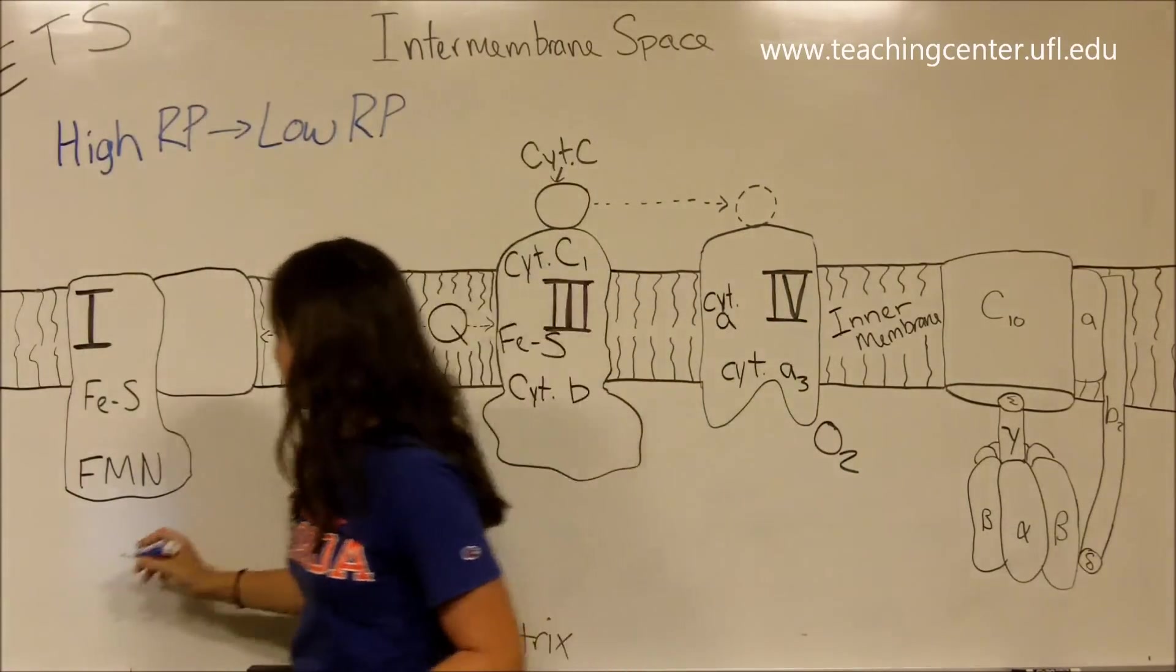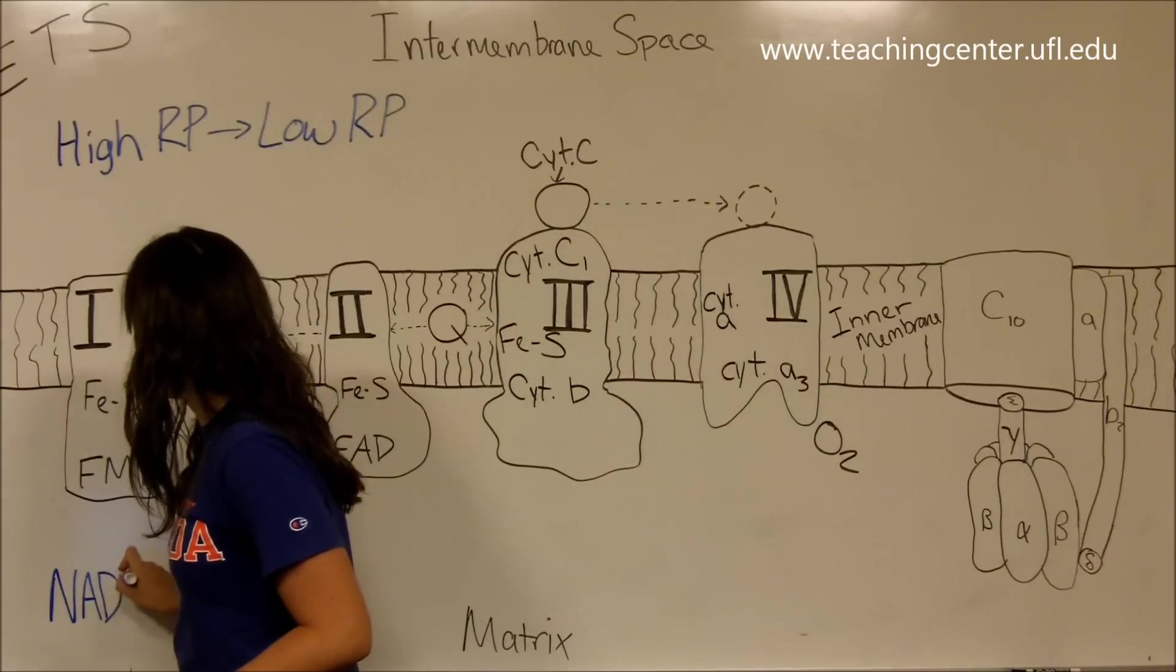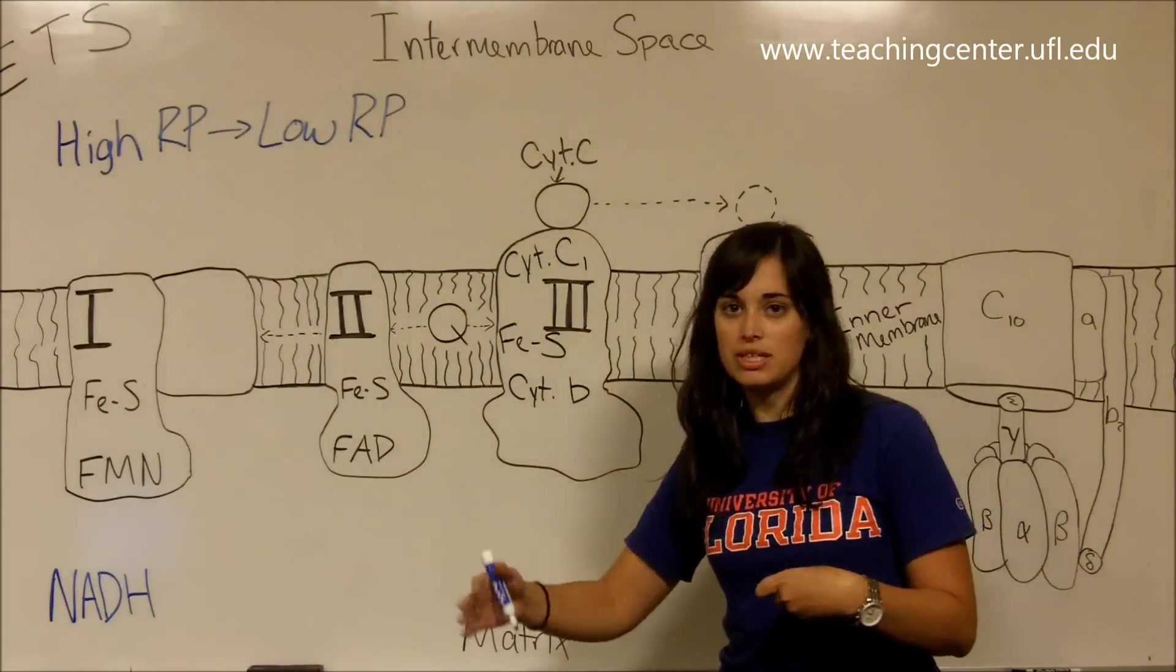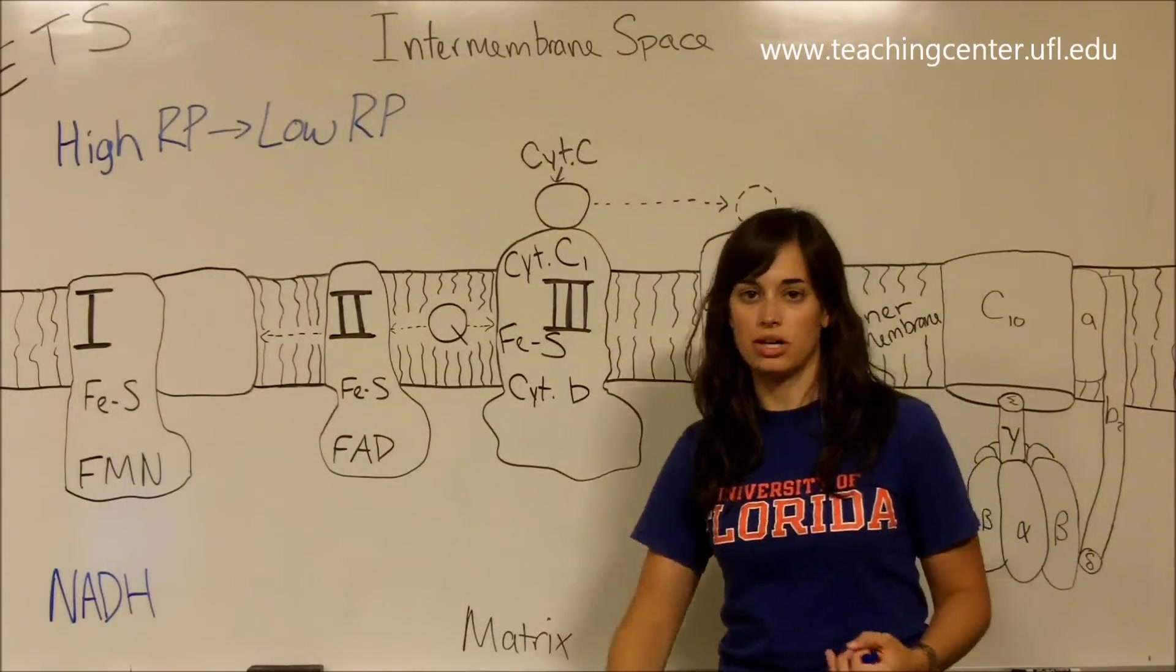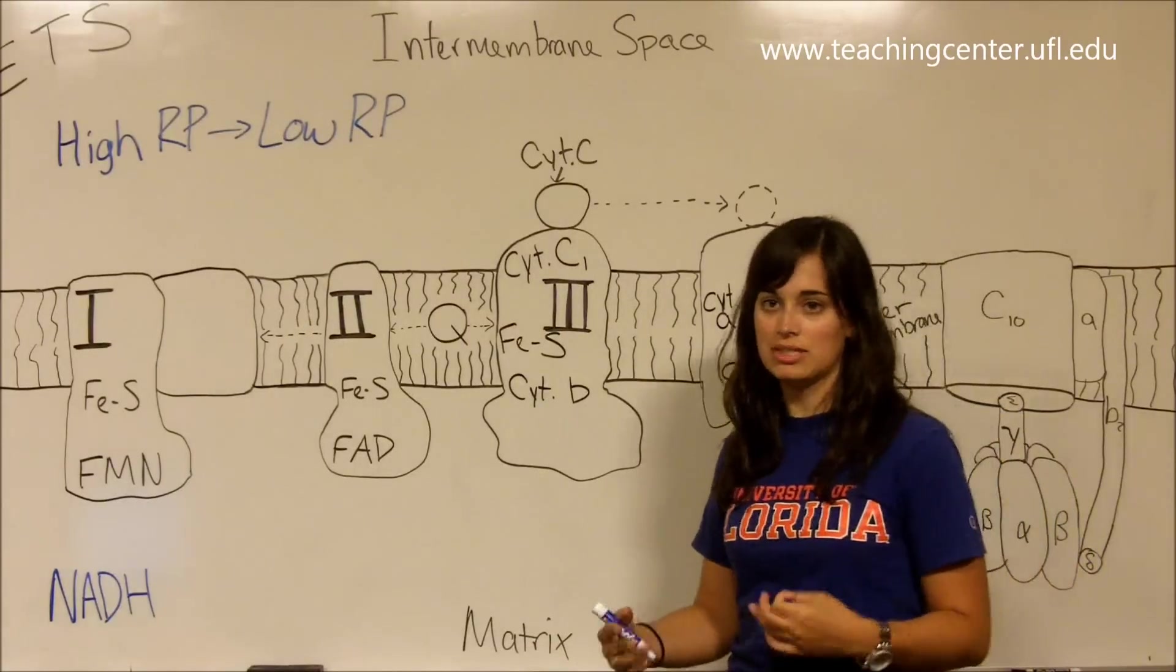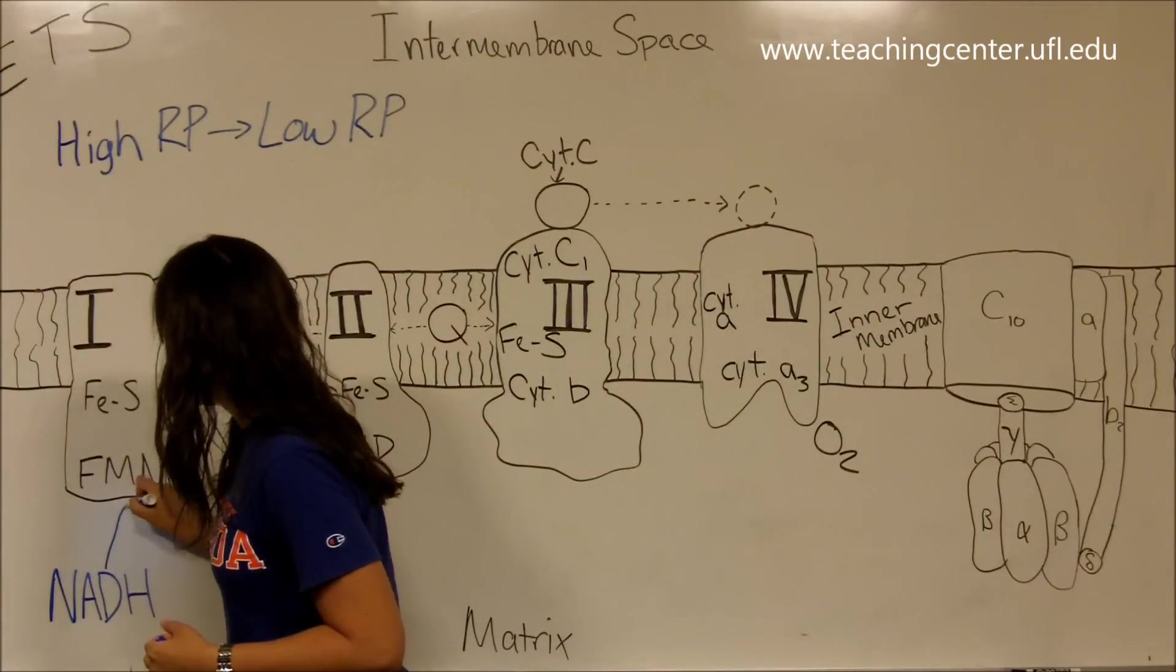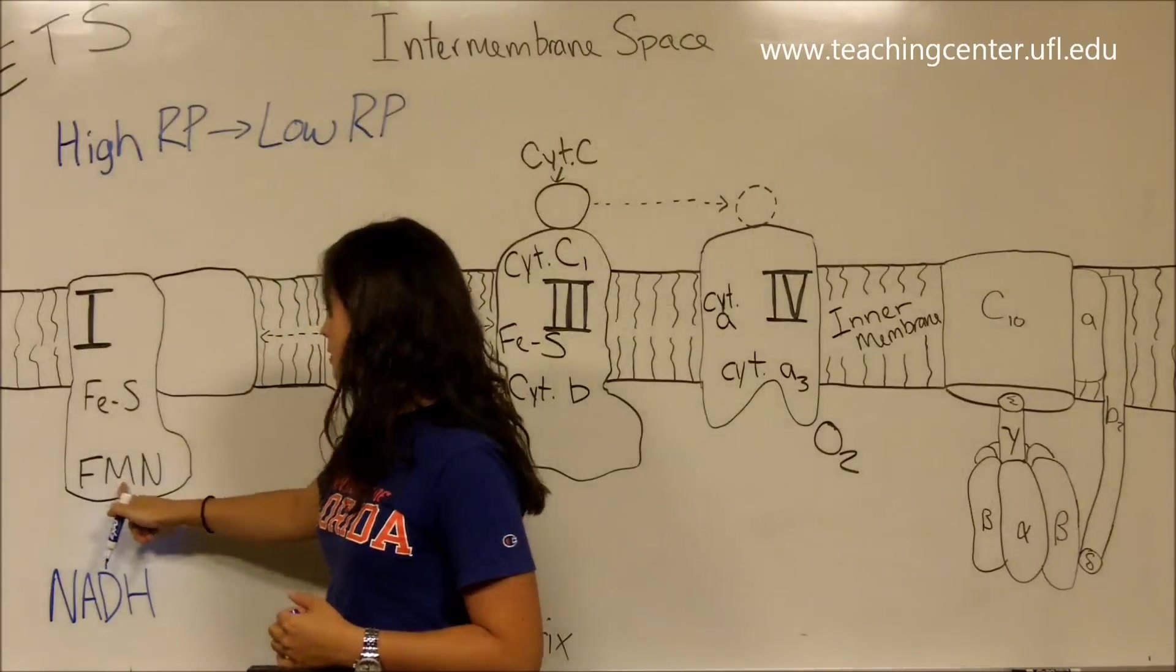We have NADH coming in here. So NADH is one of our reduced electron carriers. Remember in the end that NADH can make three ATPs once you go through all of this whole process by donating its two electrons. And our other electron carrier, FADH2, can only make two ATPs. And we'll get into that.